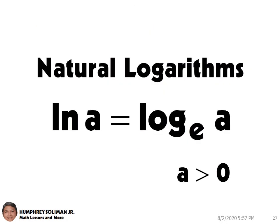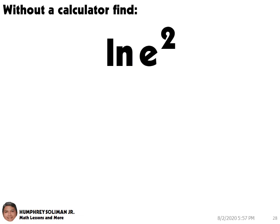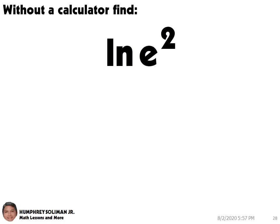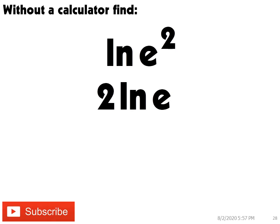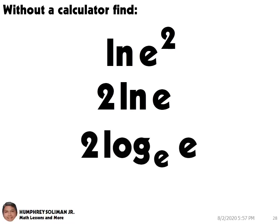Natural logarithms. ln a is equal to log base e of a, where a is greater than 0. So whenever you see an expression for natural logarithm, think of it as log base e. In our next example, without a calculator, we need to find ln e squared. We can put the exponent of e in front of the natural logarithm. Since ln is equal to log base e, this will be equal to 2.